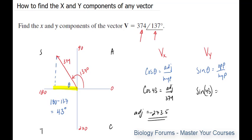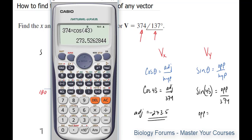I'm just plugging in the values that we've already established. The opposite is what we're looking for, the hypotenuse is what we have, and the opposite is equal to 374 times sine of 43. We get 255...